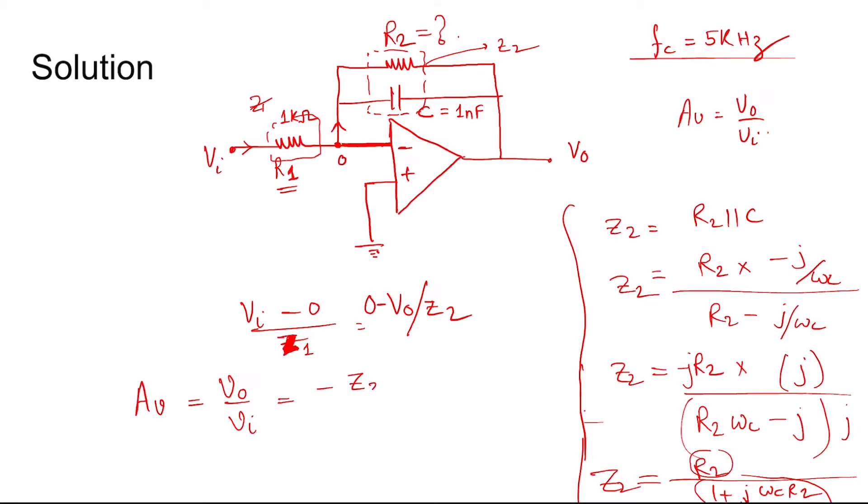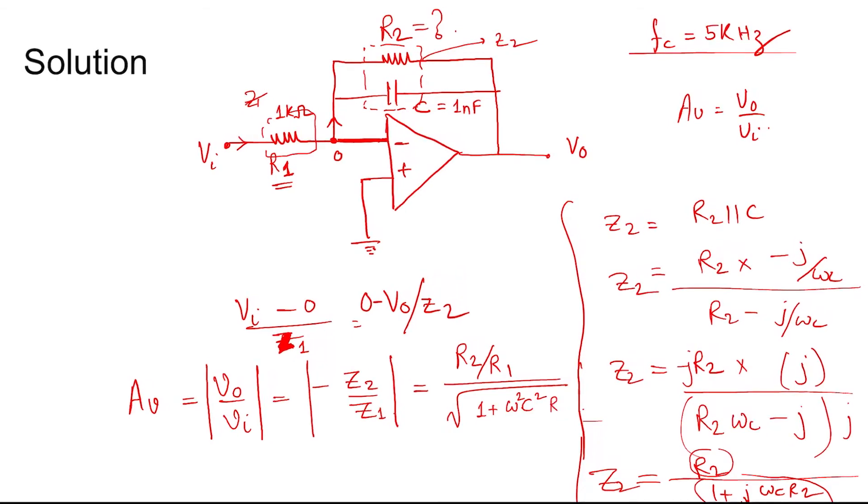This equals minus Z2 by Z1. But actually, the definition of gain is the modulus of that, so modulus of this, which equals R2 by R1 divided by √(1 + ω²C²R2²).